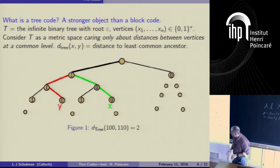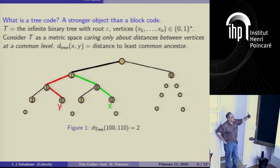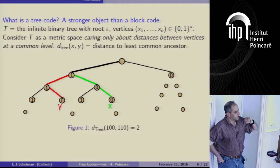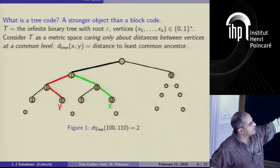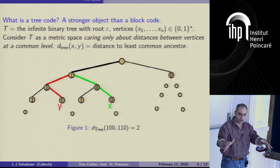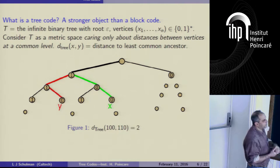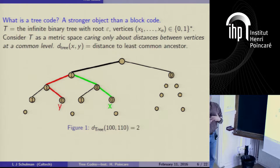I'm going to give the definition again, just to make sure everybody in the room has it. A tree code is a stronger object than a block error-correcting code — stronger in the sense that if you have an explicit construction of tree codes, you can read off a block code. A tree code is an infinite tree, which may as well be binary; the degree is really not important, and the problem gets easier as the degree gets larger.